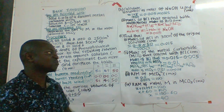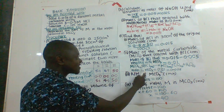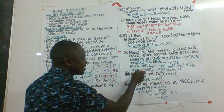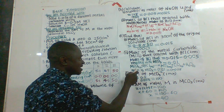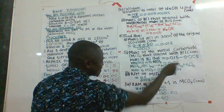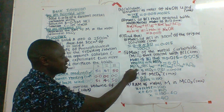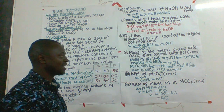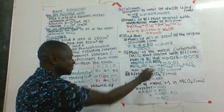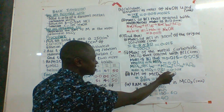But the question asks for the moles of the carbonate that reacted with HCl. We write the equation: MCO₃ + 2HCl → MCl₂ + CO₂ + H₂O. From this equation, the mole ratio of metal carbonate to hydrochloric acid is 1:2. Therefore, moles of carbonate = 0.01 ÷ 2 = 0.005 moles.